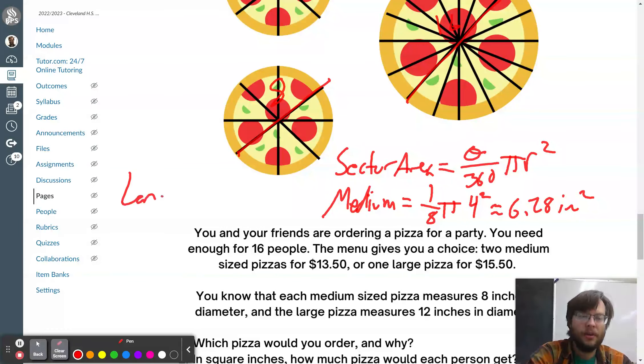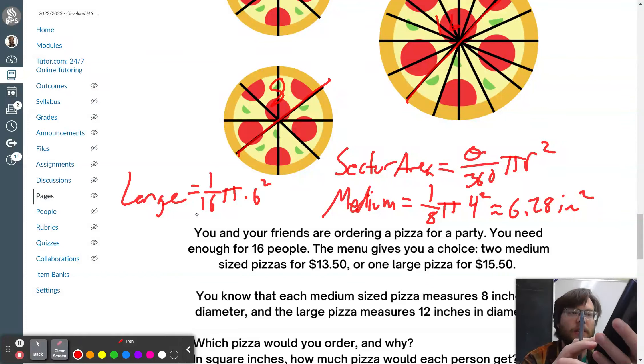If you order the large, then it's 12 inches in diameter, but you get one-sixteenth of it. So, you could calculate that's 22 and a half degrees, or you could just say that's one-sixteenth of a pizza with a radius of 6. Just type that in. One-sixteenth times pi times 6 squared. And that comes out to be 7.07 square inches of pizza.